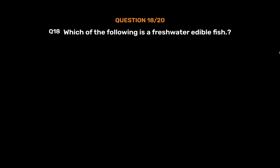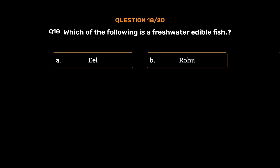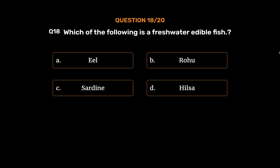Question 18: Which of the following is a freshwater edible fish? Option A: Eel. Option B: Rohu. Option C: Sardine. Option D: Hilsa. The correct answer is Option B: Rohu.